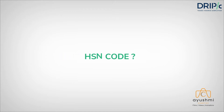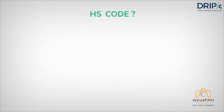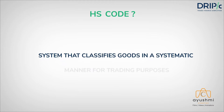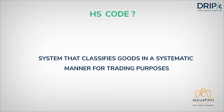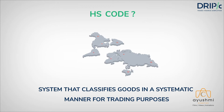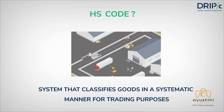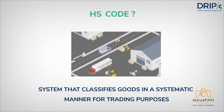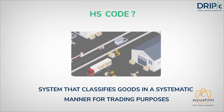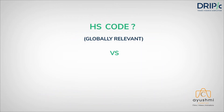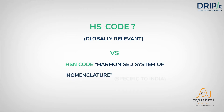HSN code is derived from HS code, which was developed by WCO as a standardized system that classifies goods all over the world in a systematic manner. Each country also has its own version of HS code, which they have used for classifying duties and taxes for their own regulations. In India, it is called HSN code, or Harmonized System of Nomenclature.